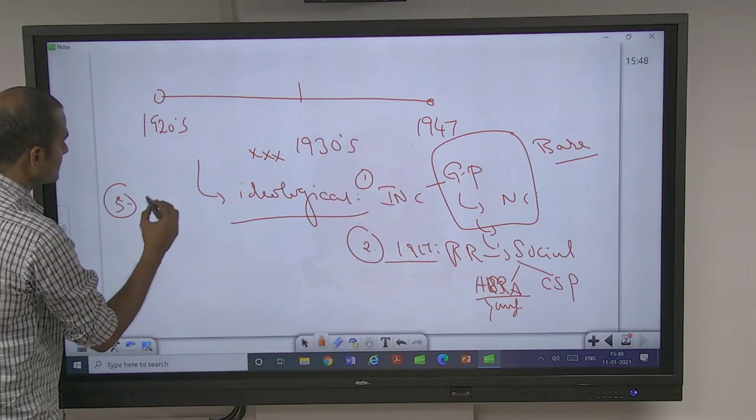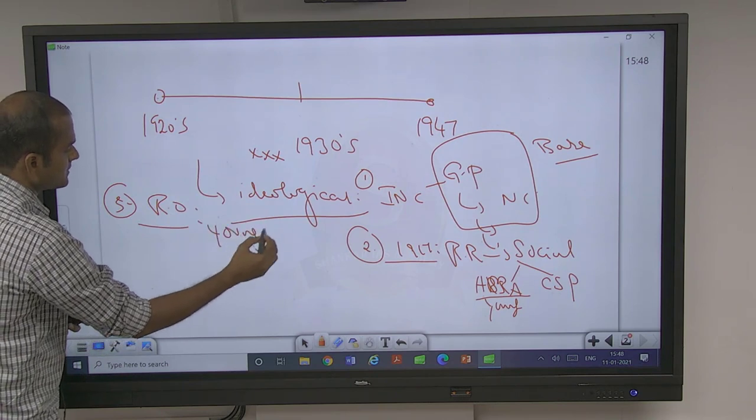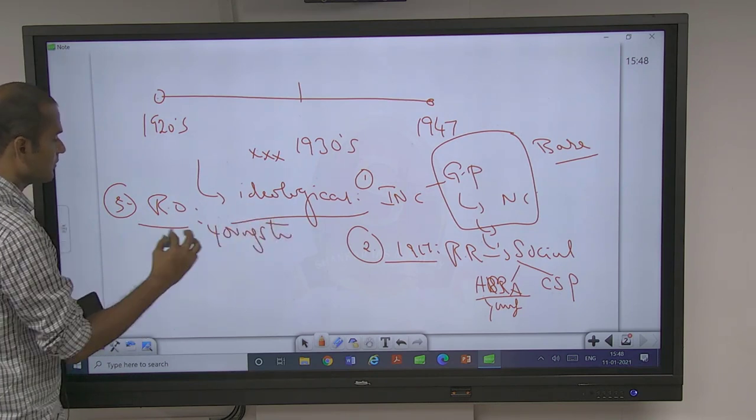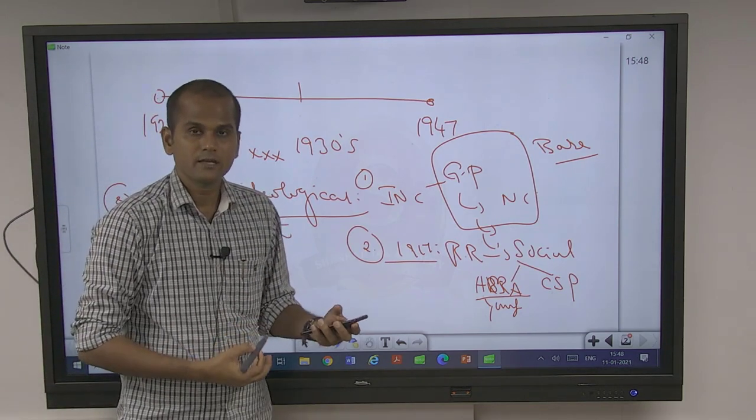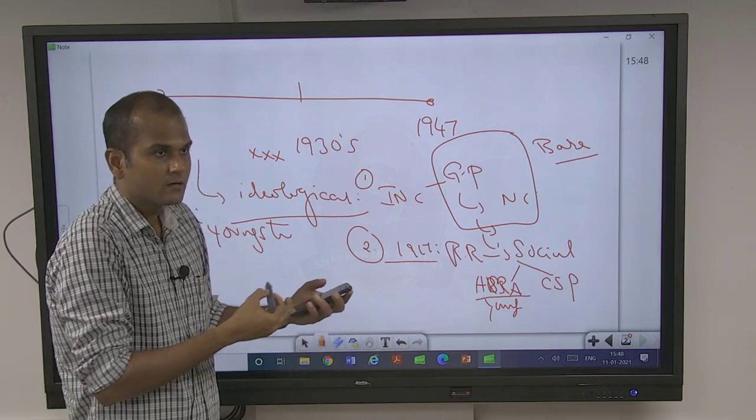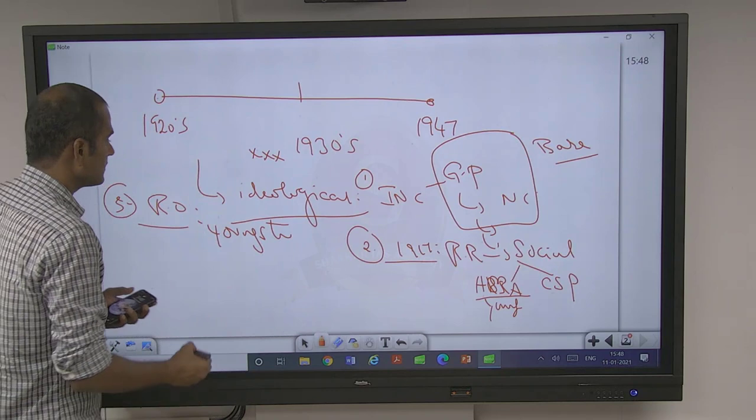And third is revolutionary organizations. So here it instigated the youngsters, so youngsters started revolutionary IRA - Indian Republican Army, Surya Sen. Even in the Bengal group, women also actively participated. It's the third.